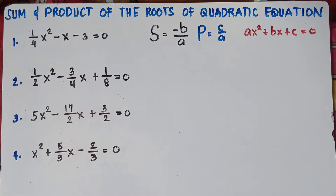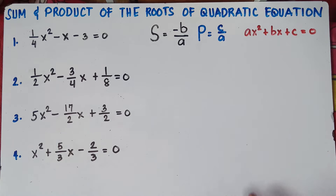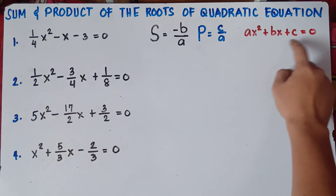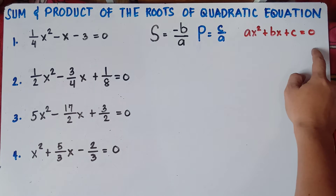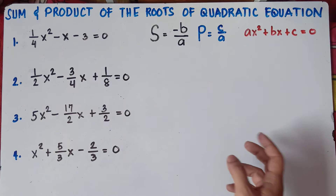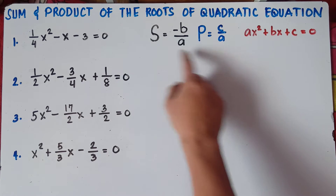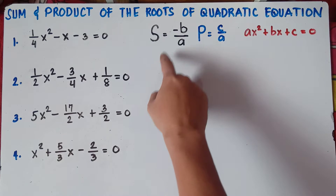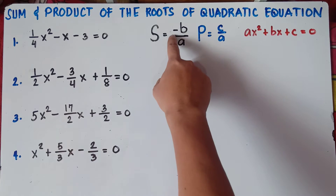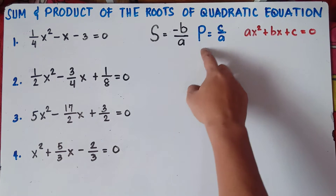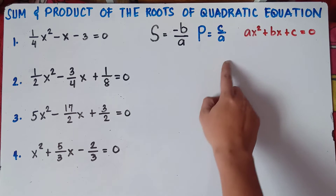Alright, so once again, you need to know the standard form of the quadratic equation: ax² + bx + c = 0, because we need to find the values of a, b, and c. We will be using this formula. The sum equals negative b over a, and the product equals c over a.